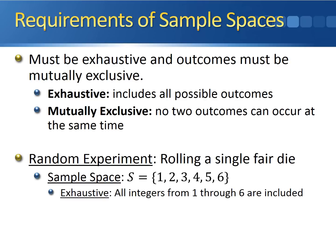If we had left out, for example, the number three, we would have written our sample space as one, two, four, five, six. But three is a possible outcome for rolling a fair die — it's possible to roll a three on a single fair die. So if we leave out the number three, our sample space is not exhaustive. We need to make sure that we include every single possible outcome of the random experiment.